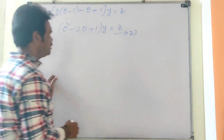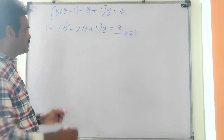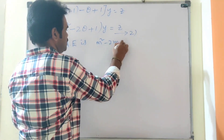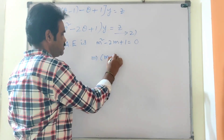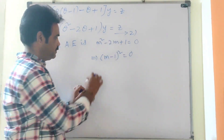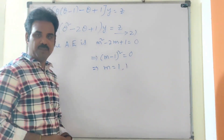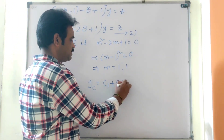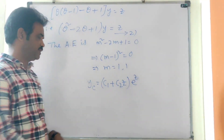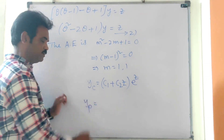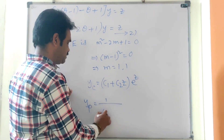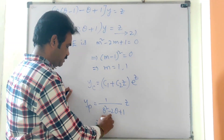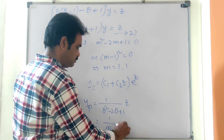The auxiliary equation is m² − 2m + 1 = 0, which factors as (m−1)² = 0. So m = 1, 1 — a twice-repeated root. Therefore, yc = (c1 + c2·z)·e^z. The particular integral yp = 1/(θ−1)² · z = 1/(1−θ)² · z.